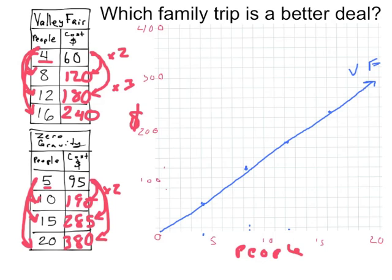Now let's graph zero gravity. That's going to go up to 5 people. Go up to 95, which is a little bit under 100. Go to 10 people, which is going to go up to 190, which is a little less than 200. 15 people go to 285. And 20 people is $380. And so this black line is the price for zero gravity.